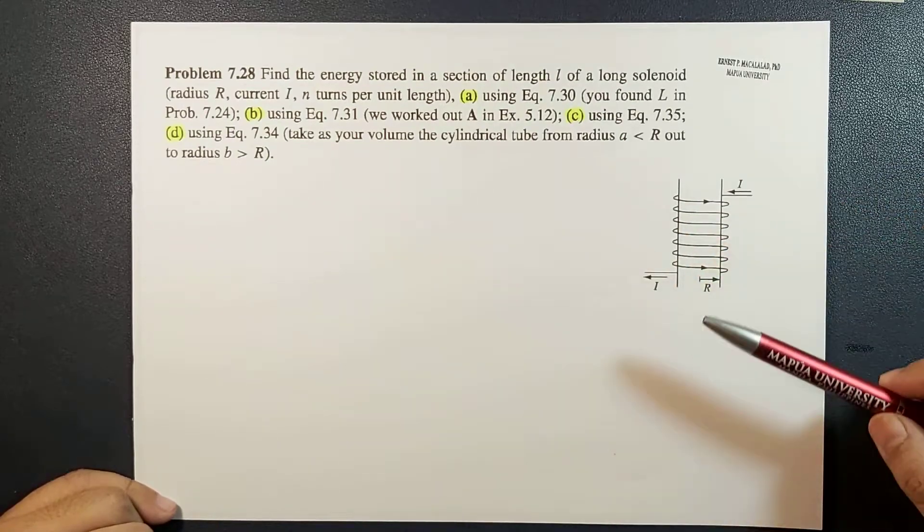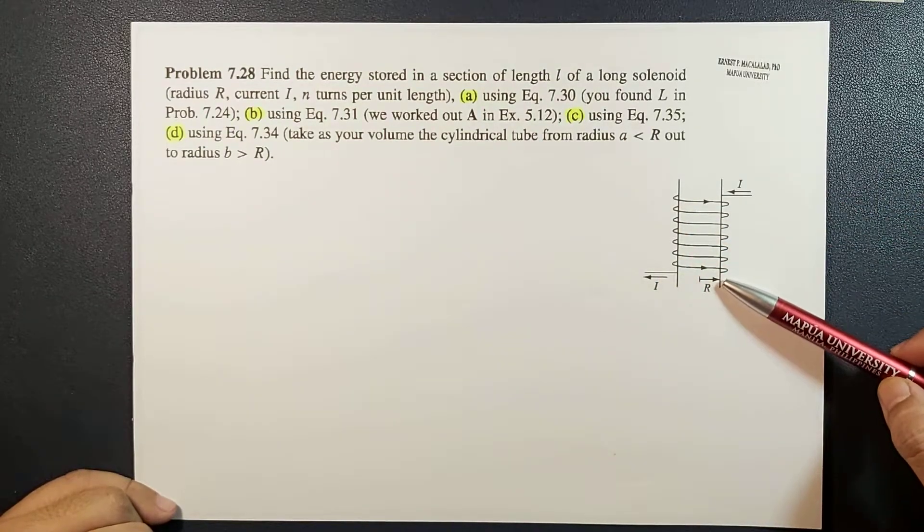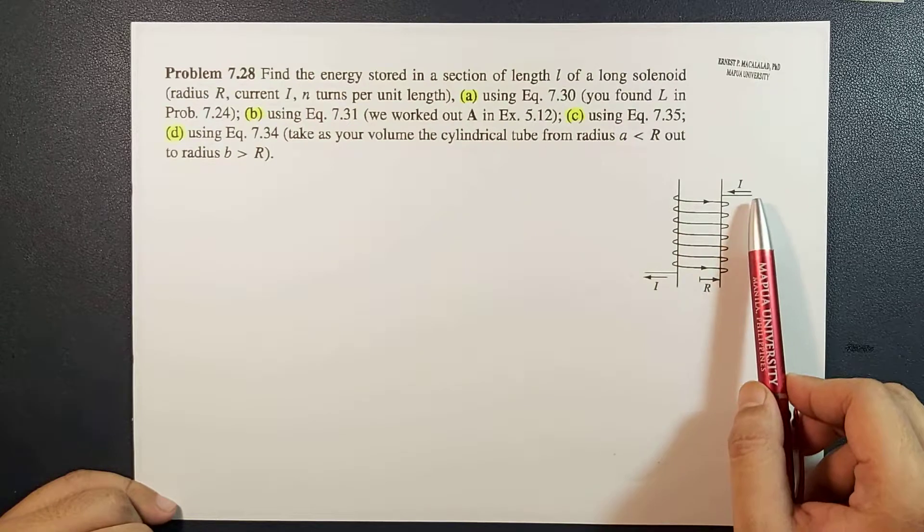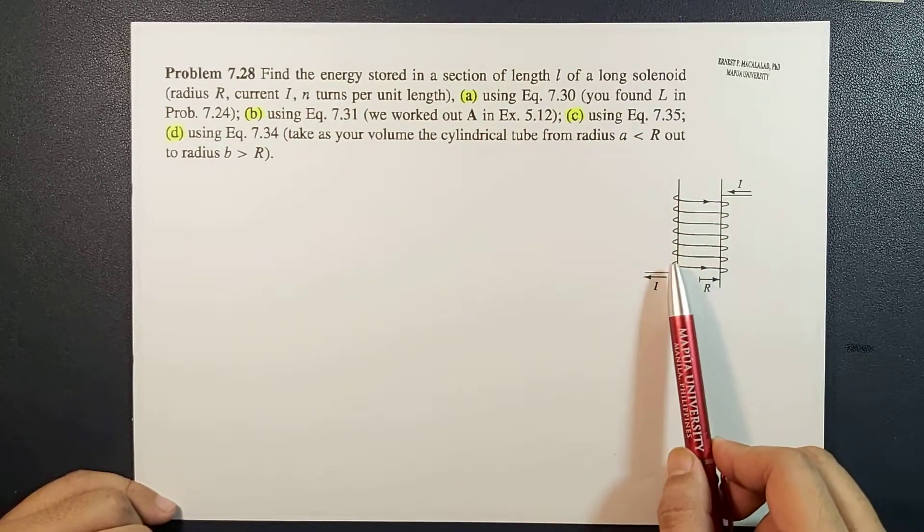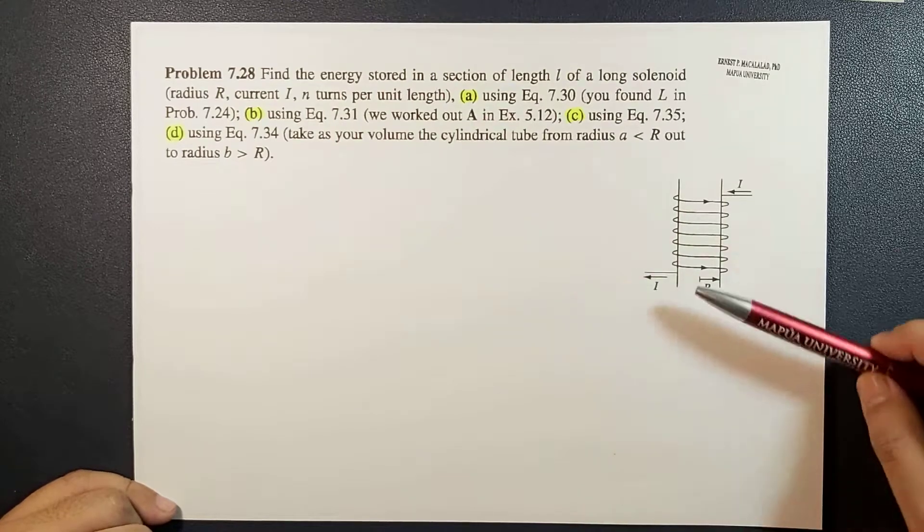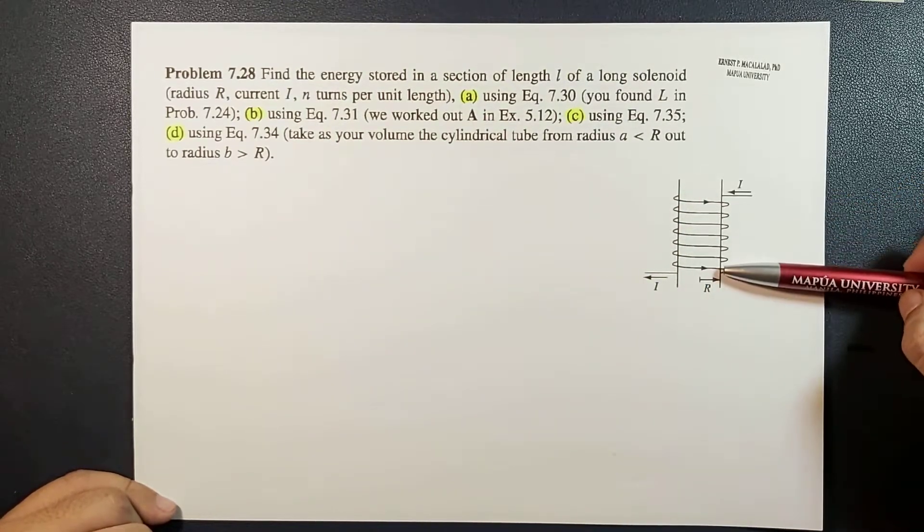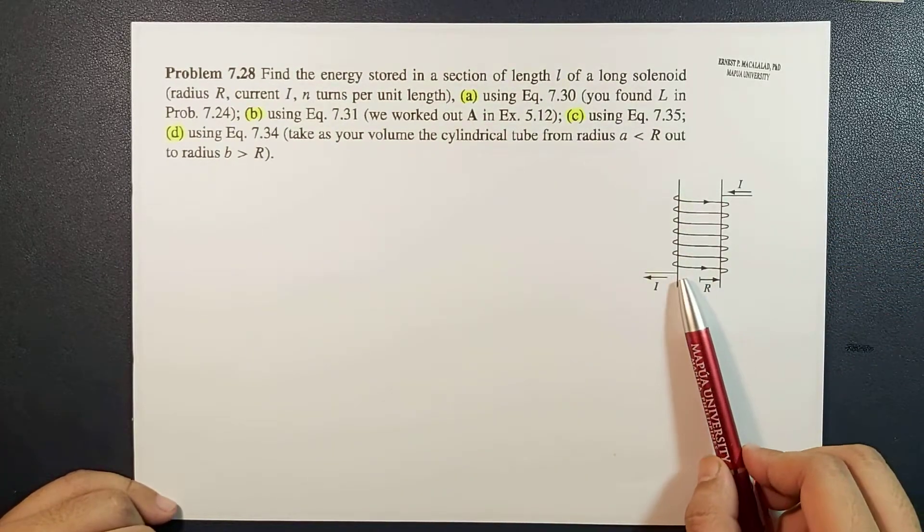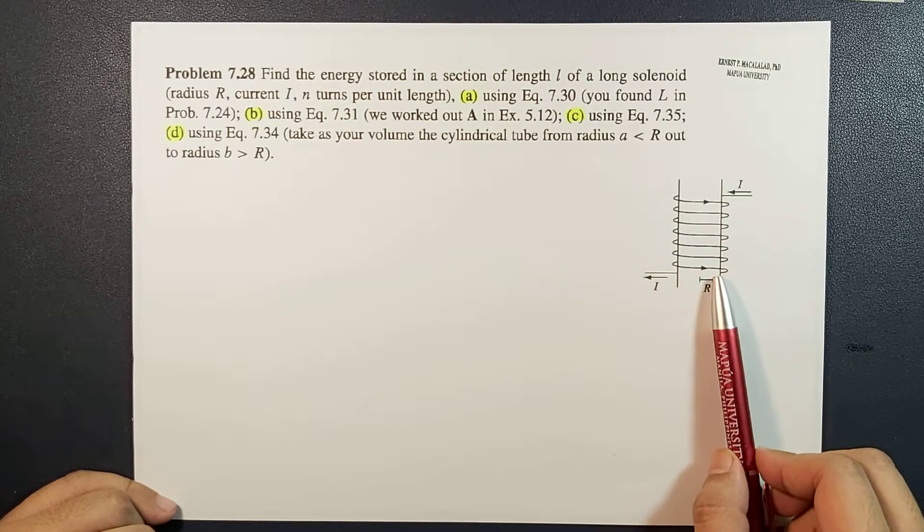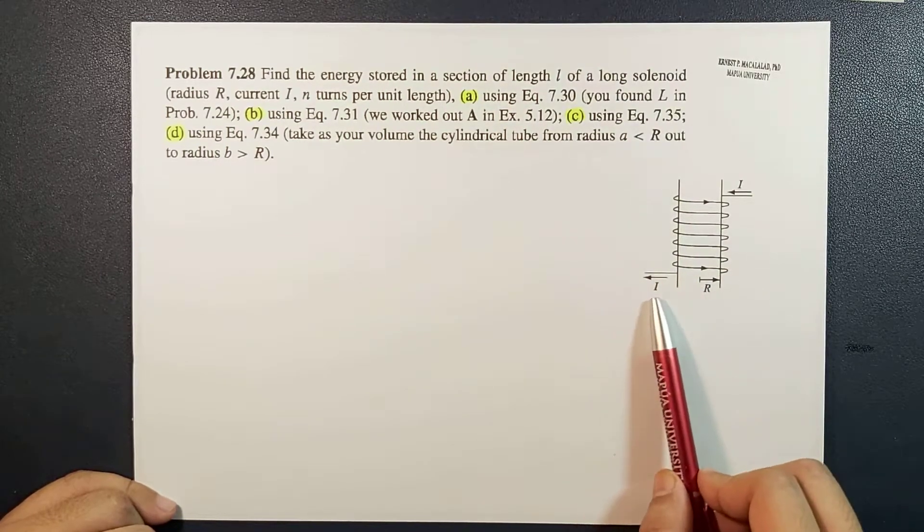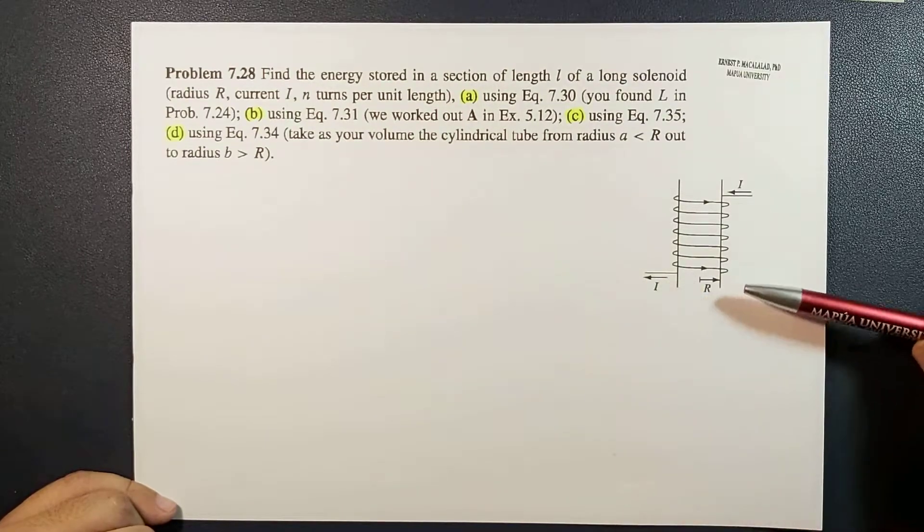The current will flow going around like this. We consider the solenoid to be a combination of circular loops with radius r that carries a current i, and the number of turns is infinity long.